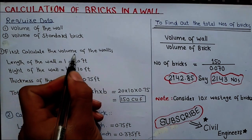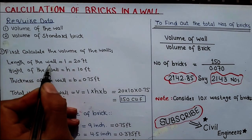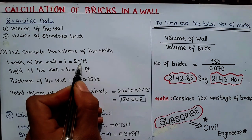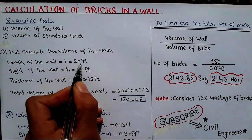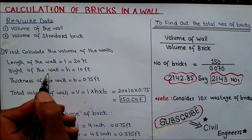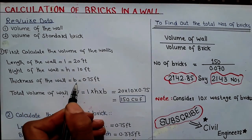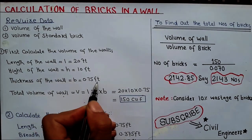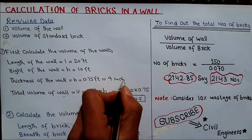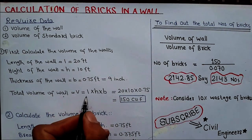First, we calculate the volume of the wall. The length L is equal to 20 feet. The height H is equal to 10 feet. The thickness of the wall, B, is 0.75 feet, which means 9 inches. So the total volume of the wall V is equal to L × H × B.